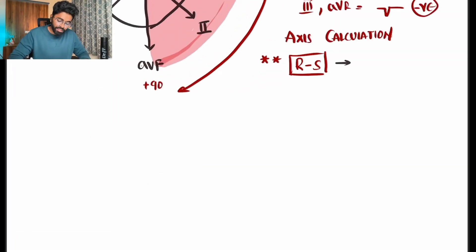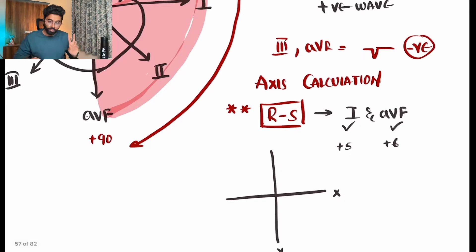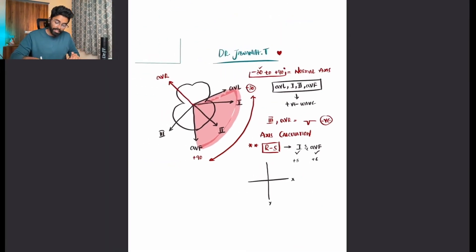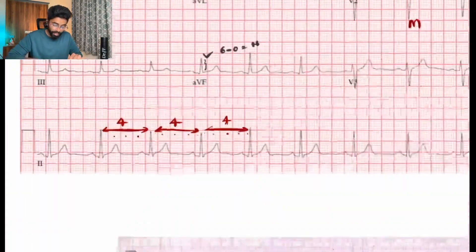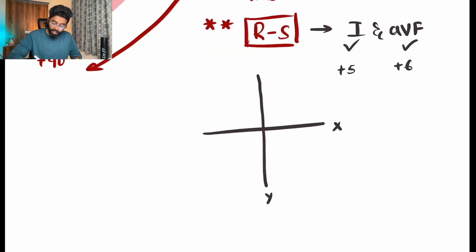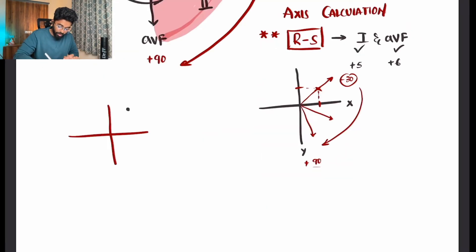To calculate the axis, use the R minus S method in two perpendicular leads — Lead I and aVF. Count the small boxes the R wave and S wave progress in Lead I: say R is 7 boxes and S is 2, so R minus S equals plus 5. Do the same for aVF: R is 6 boxes, S is 0, giving plus 6. Plot plus 5 on the x-axis and plus 6 on the y-axis and find the common point.